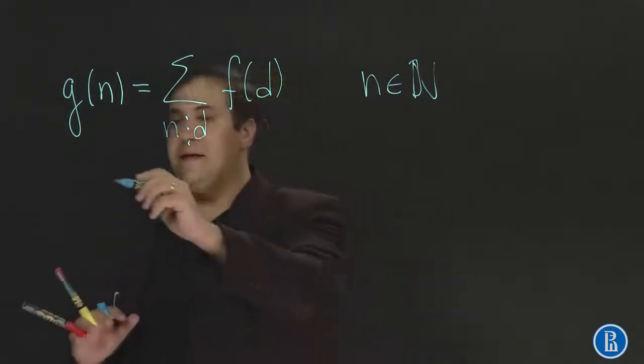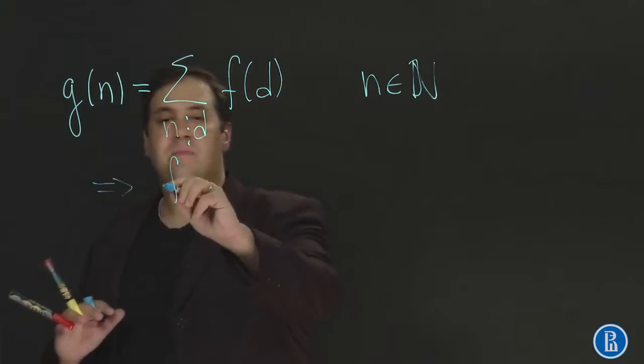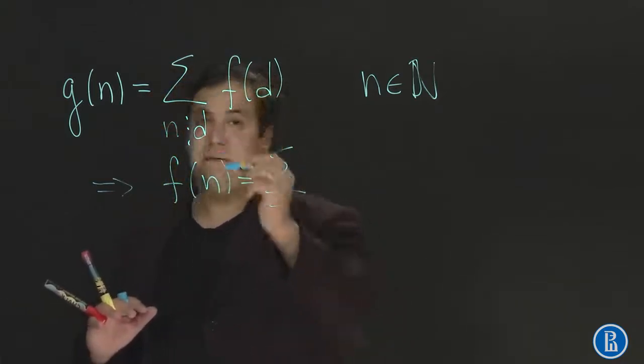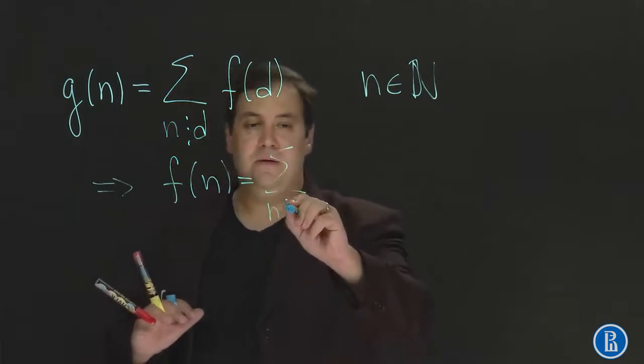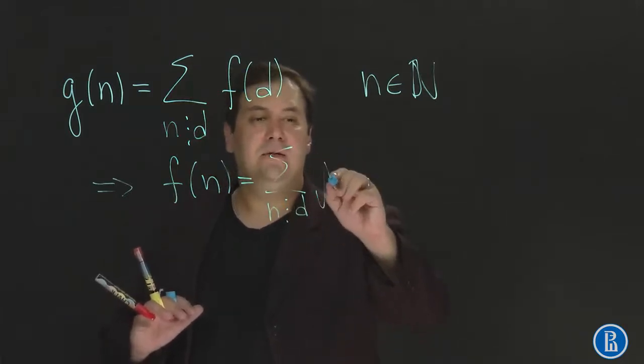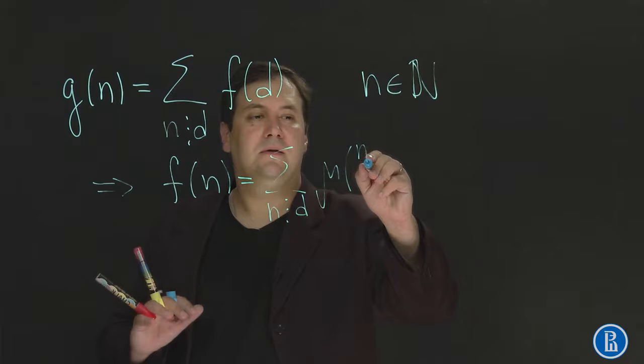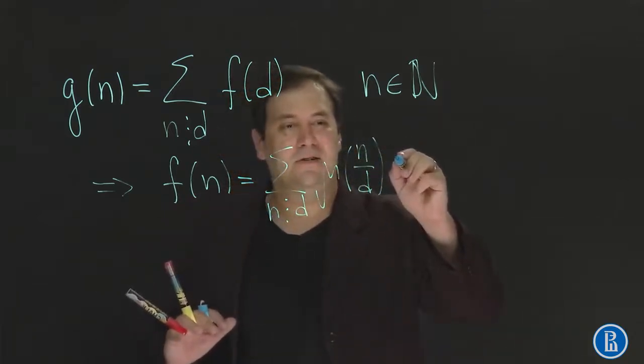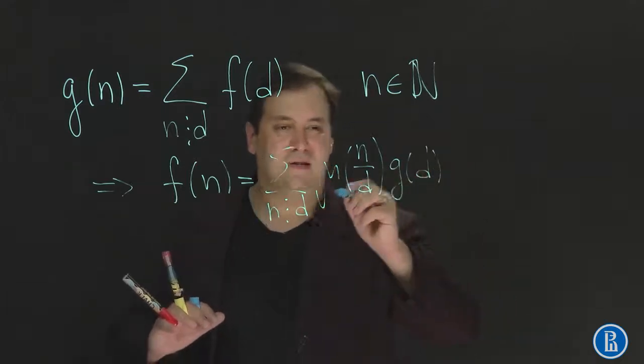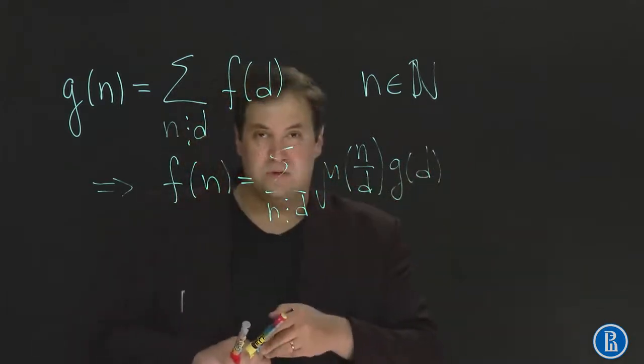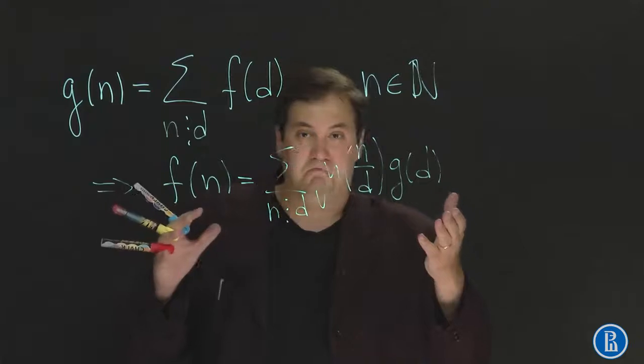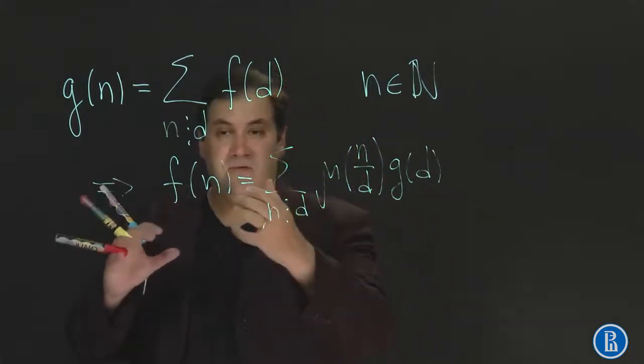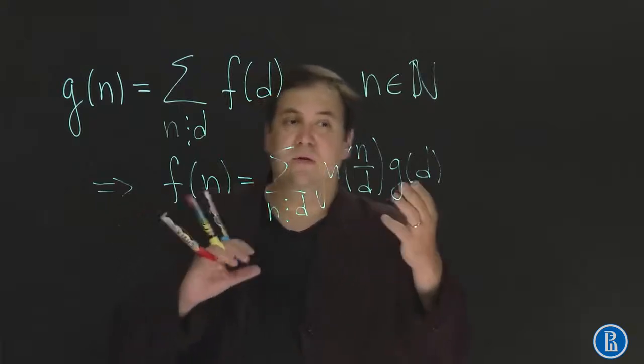Take values of f at these divisors and sum them all to gain g. In this case the Möbius inversion formula states that f of n is equal to something similar, only with a special multiplier, which uses the Möbius function. So this theorem allows us to gain function f if we know only function g.